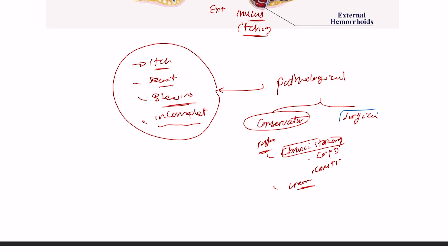Surgical management is reserved for two cases: complicated haemorrhoids, or symptomatic haemorrhoids with external protrusion that is bothering the patient. We need to explain to the patient that this procedure is very painful — they might spend up to six weeks in pain. It comes with risks such as further bleeding, failure of the procedure, or surgical site infection. The pain in particular is exquisite and needs to be clearly explained.